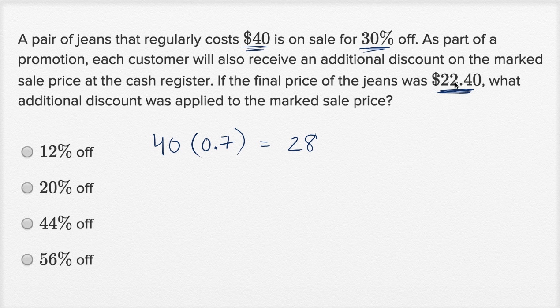Well, the final price of the jeans was $22.40. What additional discount was applied to the marked sale price? Well, to figure that out, we can just divide. We can say, what fraction of 28 is $22.40? $22.40 divided by 28.